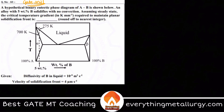A hypothetical binary eutectic phase diagram of AB is shown below. An alloy with 5% B solidifies with low convection. Assuming steady state, we need to find the critical temperature gradient that is required to maintain a planar solidification front. There are a lot of concepts involved, so let us see how to go about it.